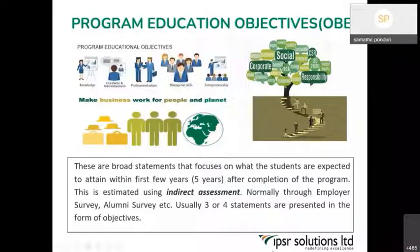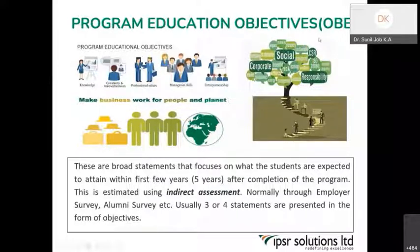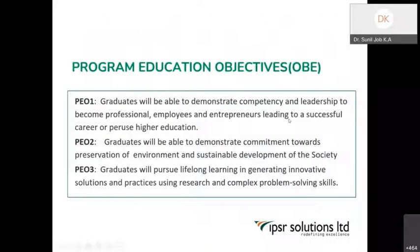Why within the first few years? Because immediately after leaving college, the major influence on an individual's graduate life will be the influence they got from the institution. That's why the first few years — after about 10 to 15 years, their life experiences and multiple other interventions will contribute to their development. So immediately after leaving, what they should be able to take up — that question's answer is what the program educational objective is.